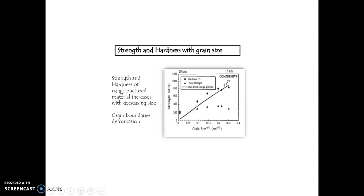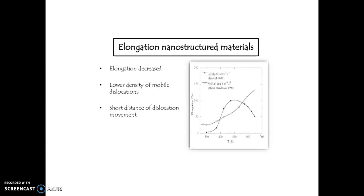Grain boundary deformation, based on that, it will be increasing the strength and hardness. Then, for elongated structured material, the elongation will be decreased. After the lower density of mobile dislocation, a short distance of dislocation movement will be achieved.